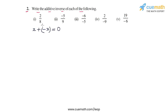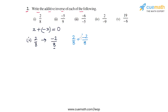So all we have to do is find the additive inverse, or the negative, of each of these rational numbers. In the first part, the rational number is 2 by 8. So the negative of 2 by 8 will be minus 2 by 8, and this is the additive inverse of 2 by 8. We can verify: if we add 2 by 8 and minus 2 by 8, the numerators add to 0, and we get 0.